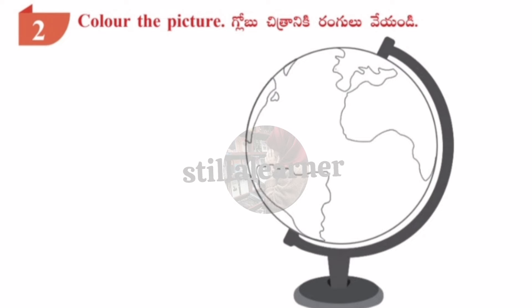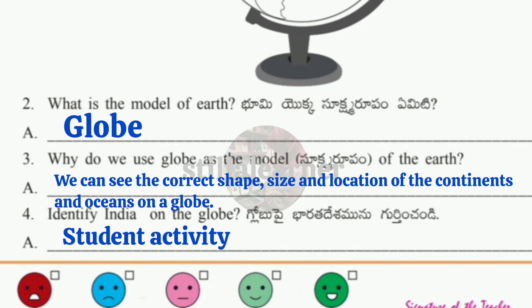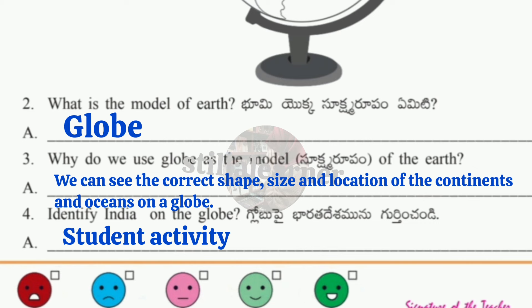Worksheet 3 questions: What is the model of earth? Answer: Globe. Why do we use a globe as a model of the earth? Answer: We can see the correct shape, size, and location of the continents and oceans on a globe.